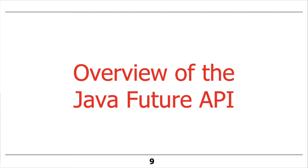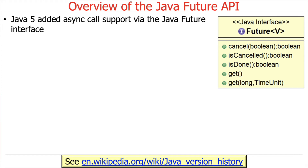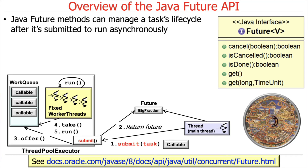So given that as background, let's now go ahead and talk about the Java Future API. Java Futures were added in Java 5, which added asynchronous call support via the Future interface and a few other things that came along as well, such as the executor framework, which we'll talk about very briefly. The Future interface has five methods, and these methods are used to manage an asynchronous task's lifecycle after it's been submitted to run asynchronously — typically using the Java executor framework.